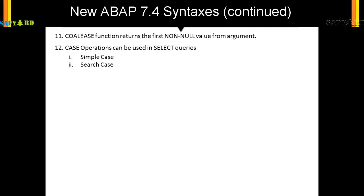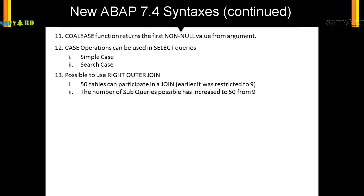After the case operations, let's see what is next. From ABAP 7.4 it's possible to use right outer join. Until now you could do left inner join, left outer join, but you could not do right outer join. So if we had to do a right outer join, we used to swap the tables to the left side and still did left inner join.